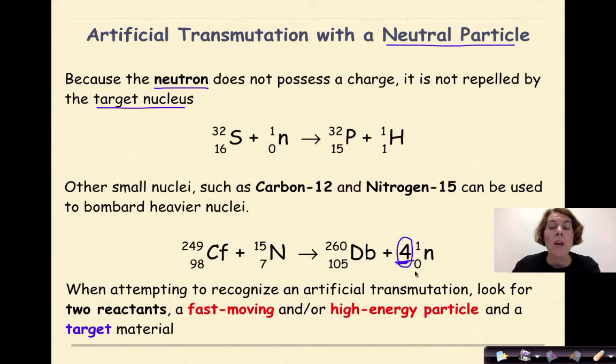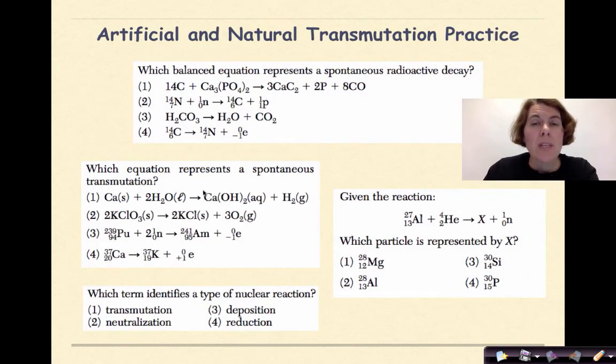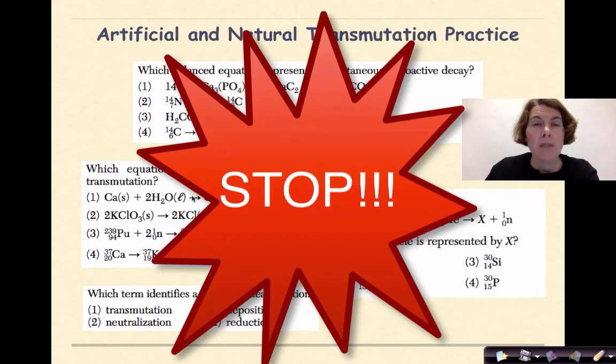So here we have californium-249 being bombarded with nitrogen-15. We form dubnium-260 and four neutrons. So this four here is like a coefficient, representing four neutrons that are released from this reaction. When attempting to recognize an artificial transmutation, look for two reactants: a fast-moving or high-energy particle and the target material.